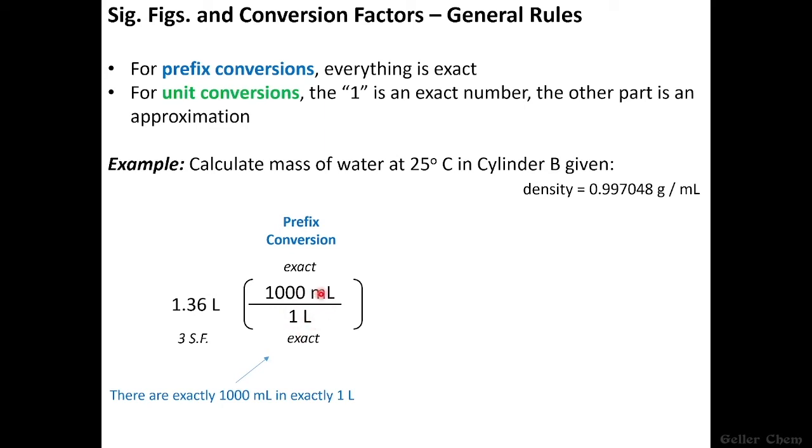And these are both to be considered as exact numbers. There is no error in this conversion here, and there never will be for prefix conversions. Everything is exact. This should be interpreted as meaning there are exactly 1000 milliliters in exactly one liter. And we recall the definition of an exact number, something that is perfect. There is no error to it whatsoever.